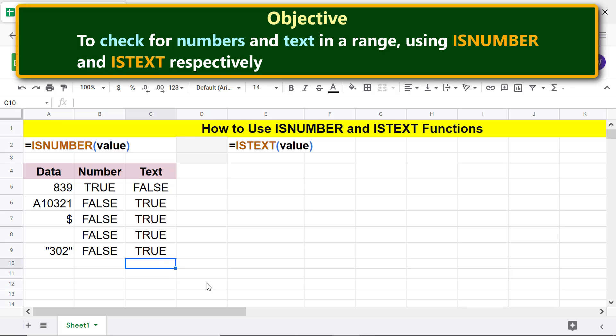Like ISNUMBER, ISTEXT has returned the logical value of TRUE for text and FALSE for non-text. Here is a key point: